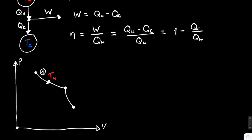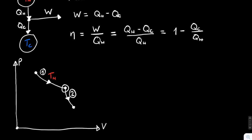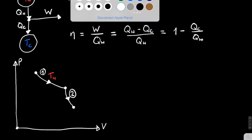The next stage looks like a decrease in temperature on the PV diagram, because isotherms lower down correspond to lower temperatures. This is actually an adiabatic expansion from point two to point three. Adiabatic means no heat in and no heat out — it's not the same as isothermal. The temperature can still change even though there's no heat flow, and indeed the gas cools as it expands.